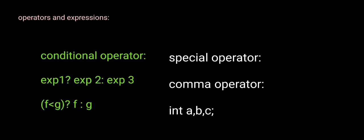Next, conditional operator. The conditional operator involves 3 expressions. Expression 1 is the test expression. All three expressions are evaluated. If expression 1 is true, expression 2 is executed. If expression 1 is false, expression 3 is executed. For example, f less than g is the test expression. If the condition is true, the value of f is executed. If f less than g is false, the value of g is used for execution.